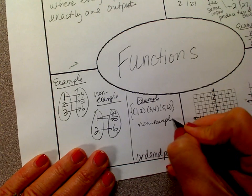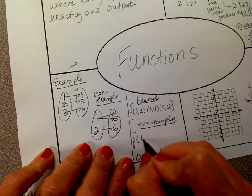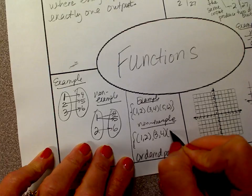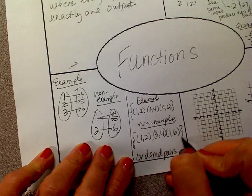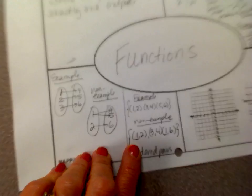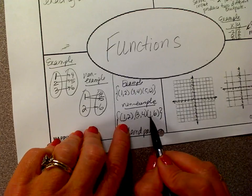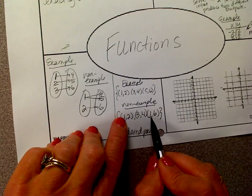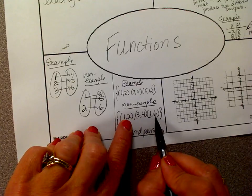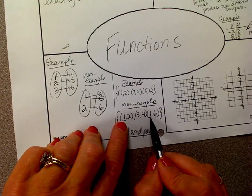Here's a non-example for ordered pairs: (1, 2), (3, 4), (1, 6). Right here is the non-example. You cannot put in 1 and get 2, but then put in 1 again and get 6. You don't want your x values — your input values — to repeat. If they do repeat, they would have to go to the same output, which is essentially plotting the same point twice.